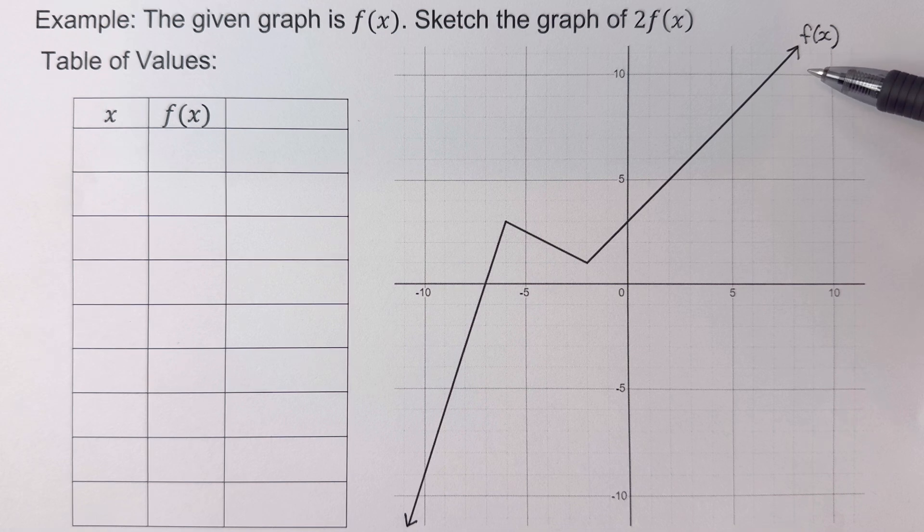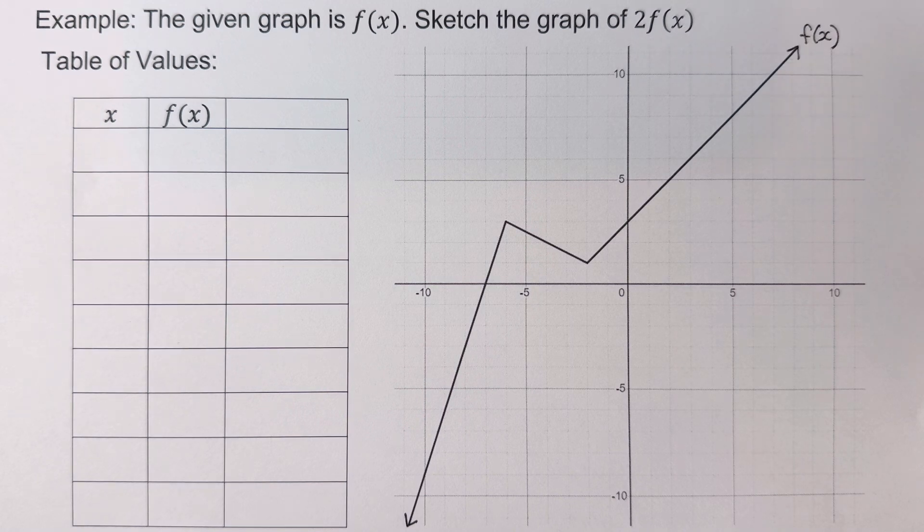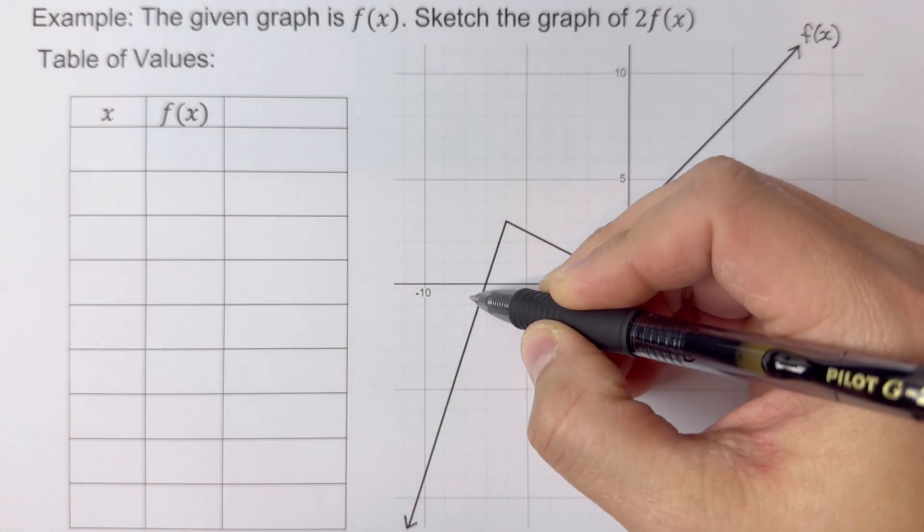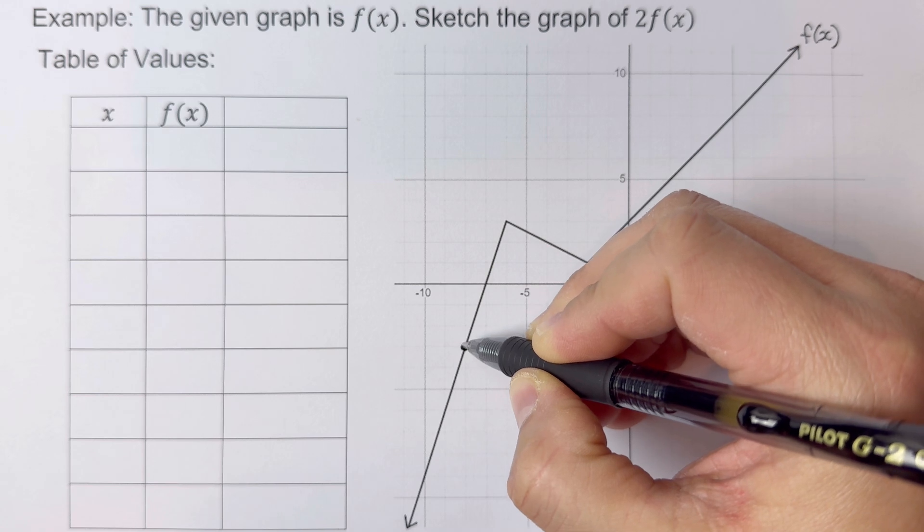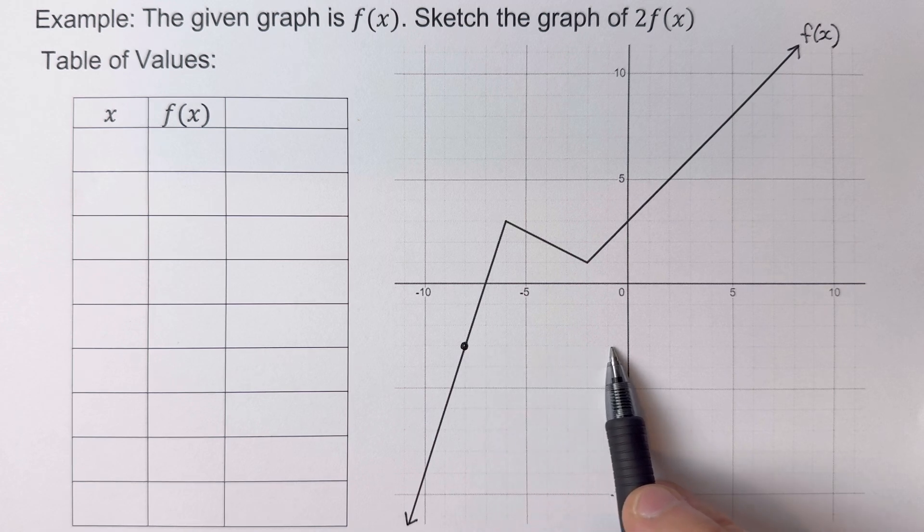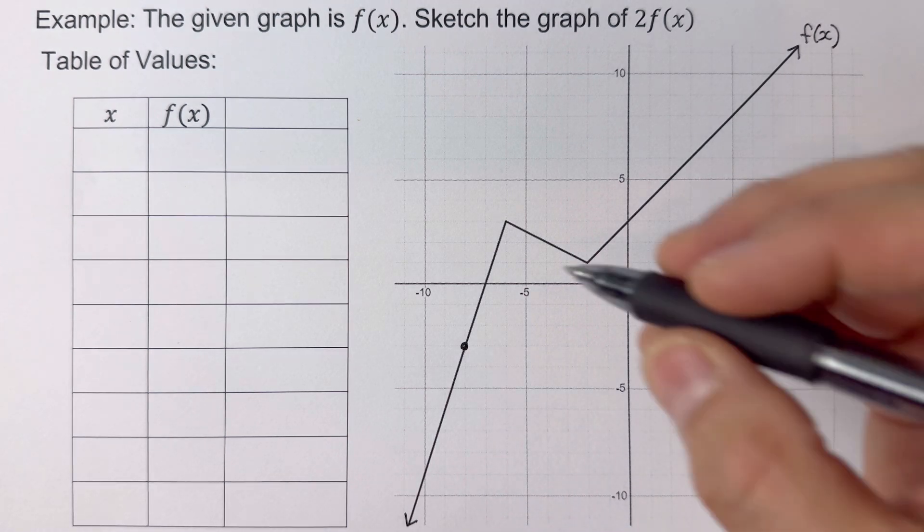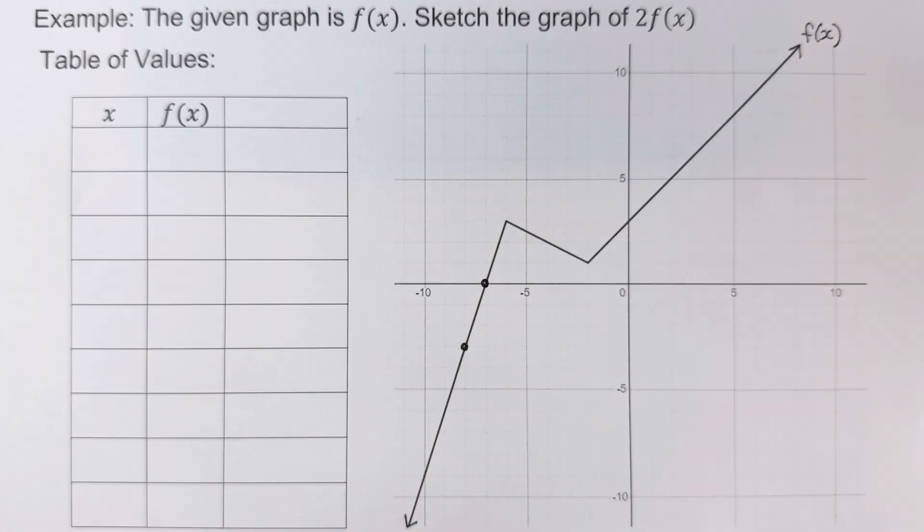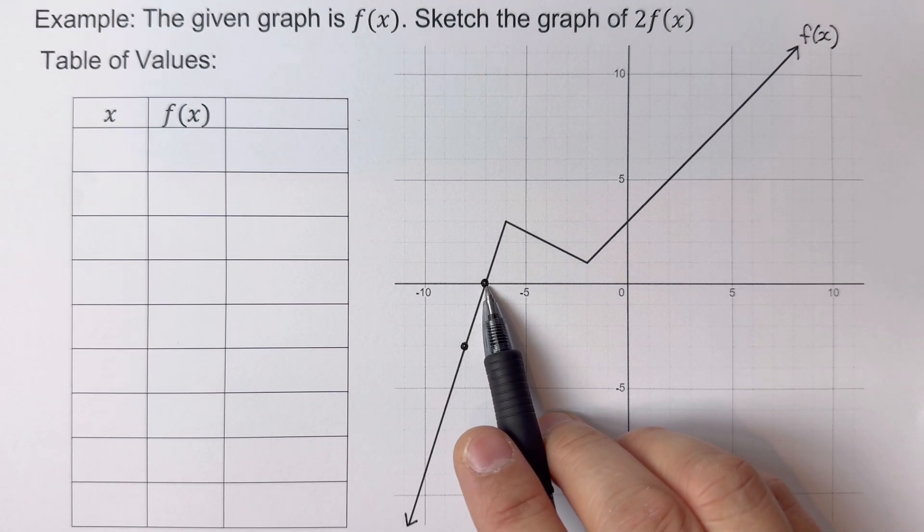Our task is to sketch the graph of 2f(x). Our first step is to determine lattice points on this function. Lattice points are points on the Cartesian coordinate plane where the values of x and y are integers. For example, this dot has x value negative 8 and y value negative 3.